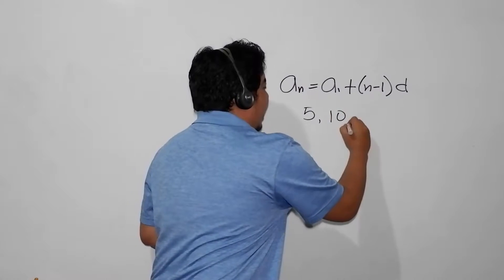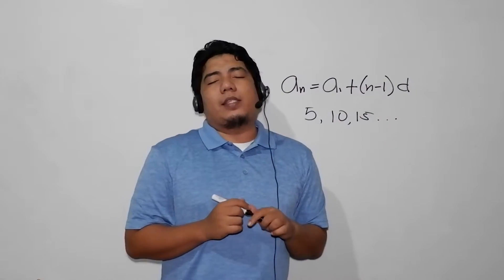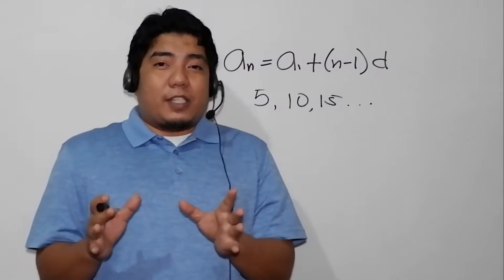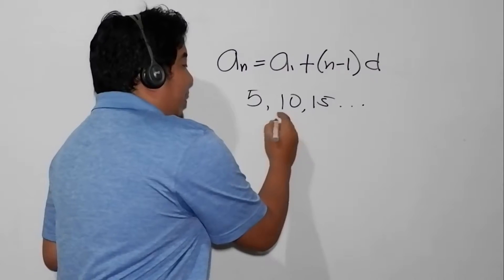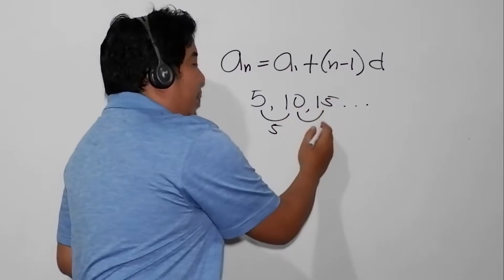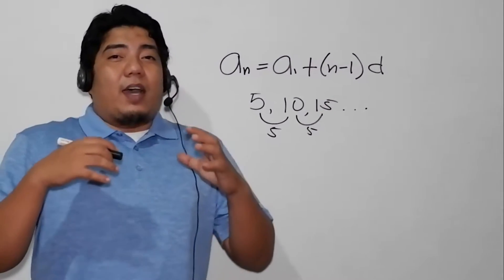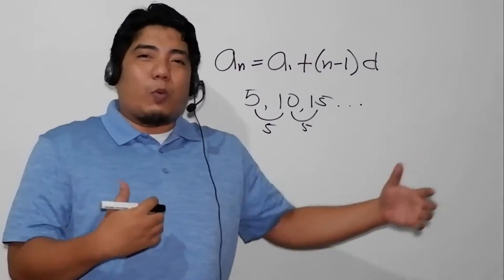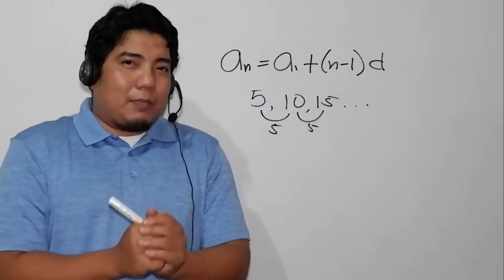Let's consider an example. We have 5, 10, 15, and so on. Can we determine that this is an arithmetic sequence? The first thing you should do is consider the difference between 5 and 10, which is 5. Then consider the difference between 10 and 15, which is also 5. If you have a common difference among the terms in the given sequence, then you can say that the given sequence is an arithmetic sequence.